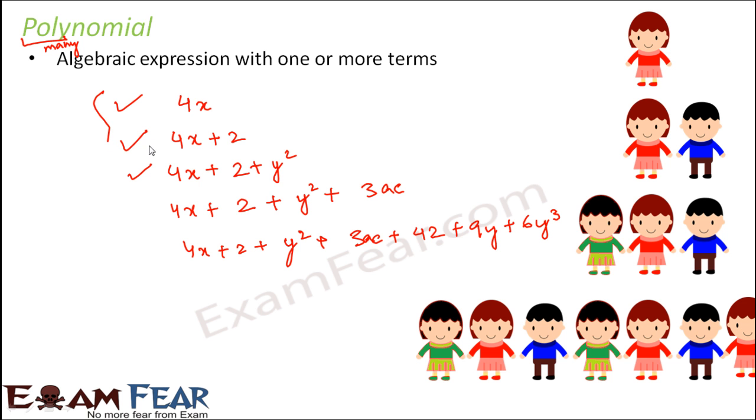So you can see that a monomial is also a polynomial, a binomial is also a polynomial, a trinomial is also a polynomial. Plus, any algebraic expression with multiple number of terms is also a polynomial. So all of these fall under the category of polynomial.